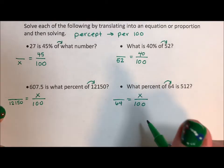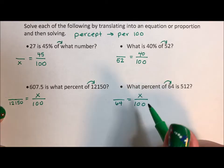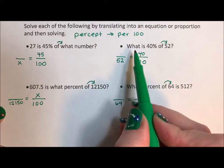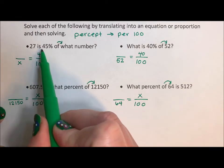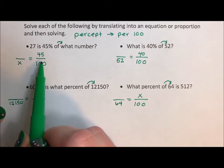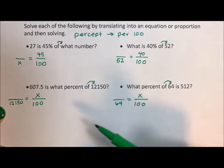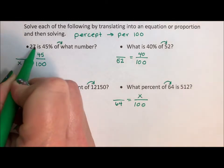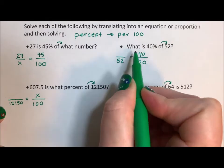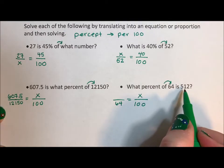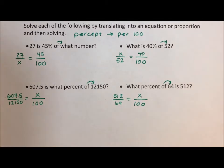Now sometimes when people do proportions with percent, they say is over of equals percent over 100. I don't really like that because the number around is can sometimes go after the word is and sometimes before the word is. The percent number is always over 100. The of the number for the denominator is always directly after the word of. So I like filling in those three numbers. Then I have one space left and that number gets filled in. So 27 is my only number left. I fill that number in last. There is no number left so I put in a variable. 607.5 is my only number left. And 512. So I just do the of and the percent, and then that last one I leave blank and it's just whatever is left gets filled in there.